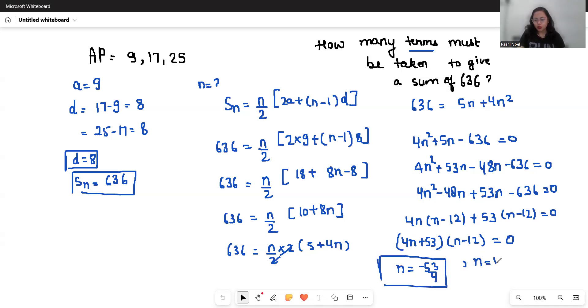So number of terms cannot be in negative or in irrational form, so n equals 12. There will be 12 terms that give a sum of 636 when the AP is 9, 17, and 25.